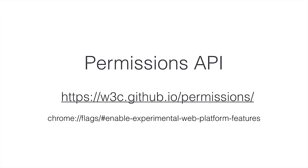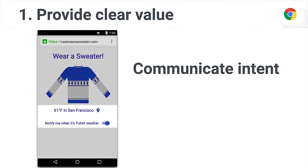The purpose of this demo is to show some principles to follow when requesting permissions. I'll walk through five key principles. The first is communicate intent and provide clear value. When requesting notifications it's really important to say exactly what you're going to be doing. In my example I say 'notify me when it's T-shirt weather' — it's very clear the only time a user is going to get bothered is when I have something meaningful to share. Explaining exactly how it's going to be used is super important.